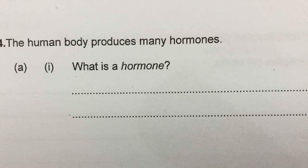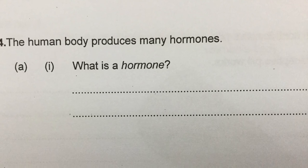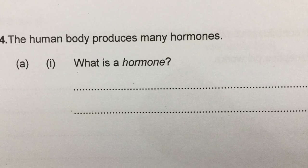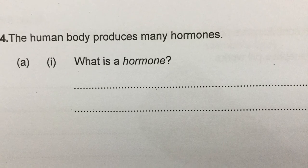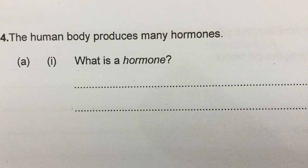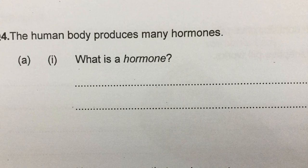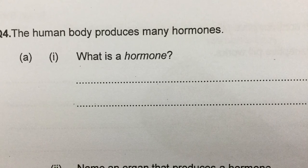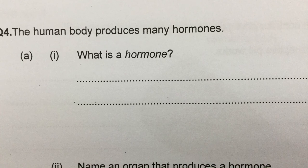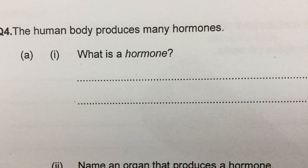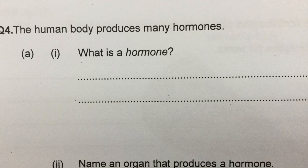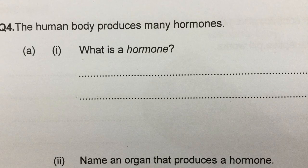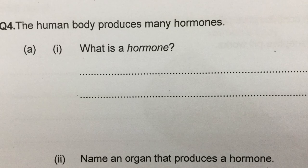So this question asks: what is a hormone? A hormone is a protein, but that's not its defining property. For example, an enzyme is also a protein, but enzymes and hormones are quite different. What makes a hormone a hormone is the fact that it's produced by a gland, that it travels in the blood, and that it causes an effect only at its target organ.